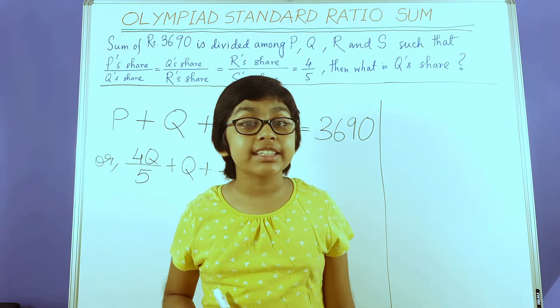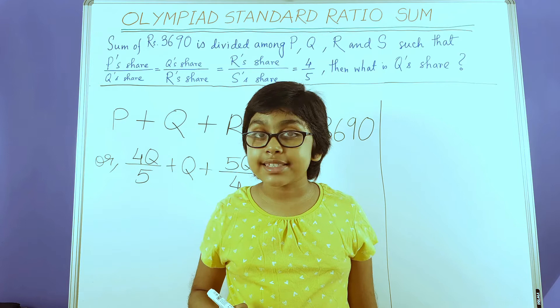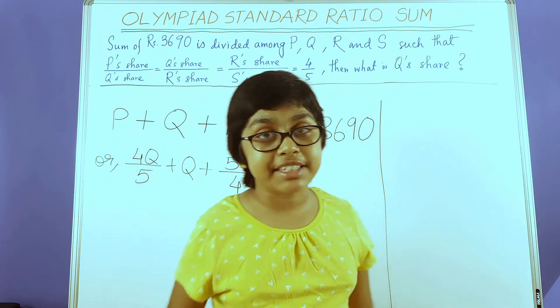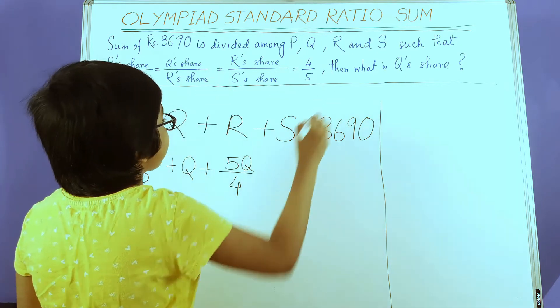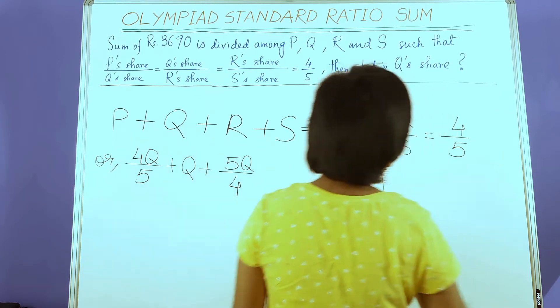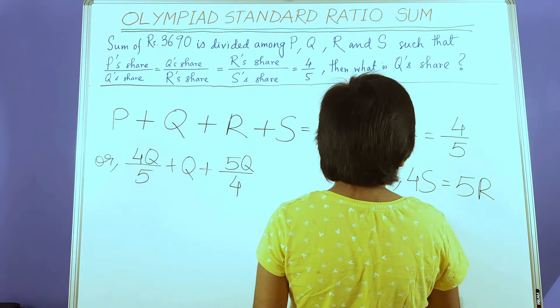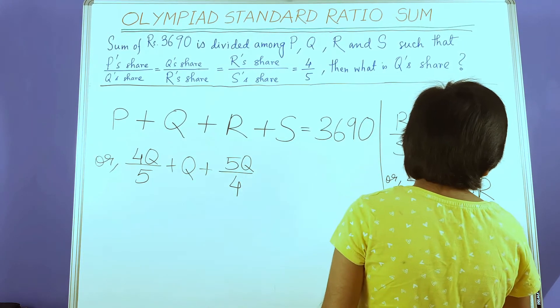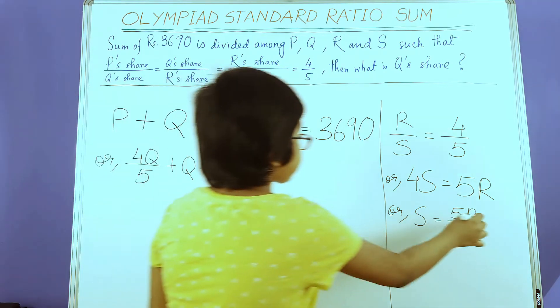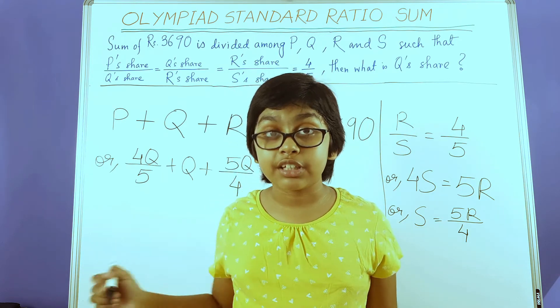Now to get S. Here there is an important thing to notice. P and R were not difficult to get because they have direct relationships with Q, but S does not have a direct relationship with Q. Hence, we have to use substitution. R by S equals 4 by 5, so 4S = 5R, or S = 5R by 4. But now we have the value of R in terms of Q, so if we substitute the value of R, we might get S in terms of Q.